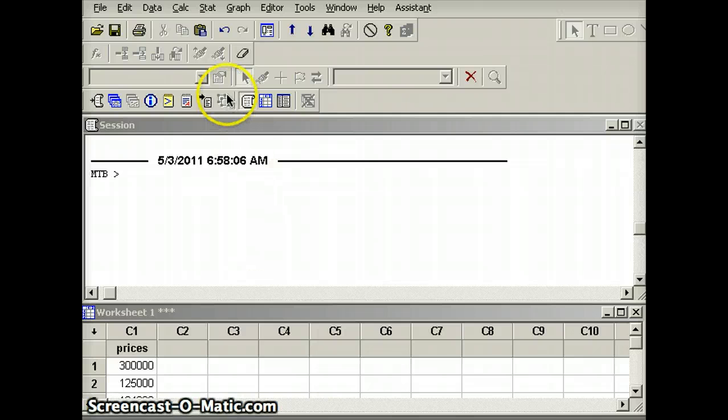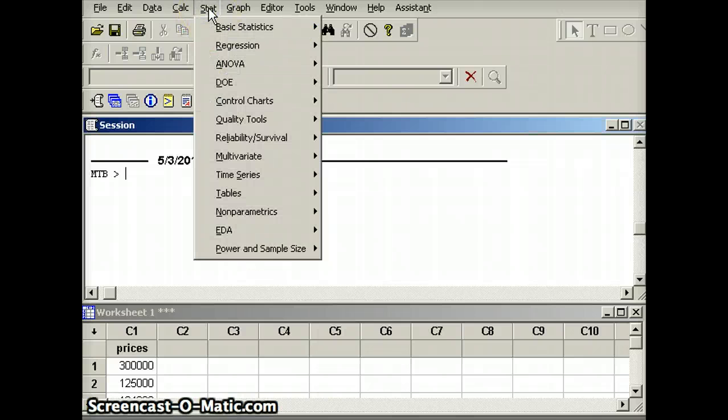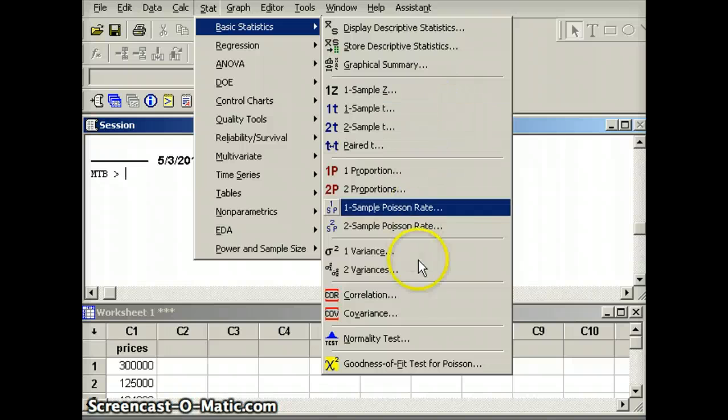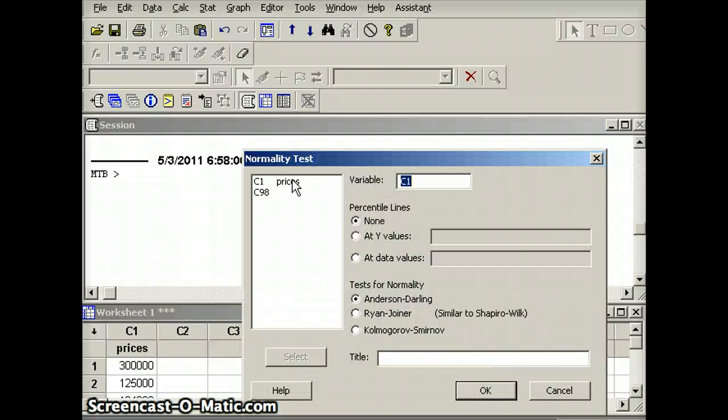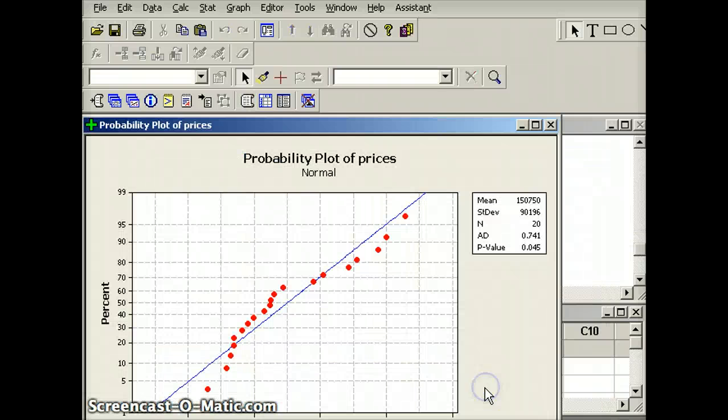So I have my prices in C1. We're going to do a normality test: Stat, basic statistics, normality test. And we're going to choose prices. And I'm going to say okay. And here you'll notice again the p-value is 0.045. The p-value is less than 0.05, so the p-value is small. There is evidence that this sample of 20 elements did not come from a normally distributed set.